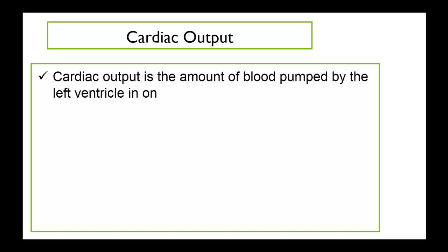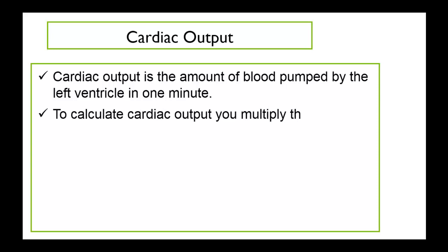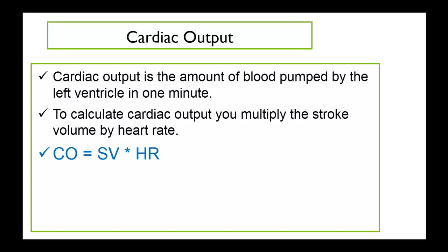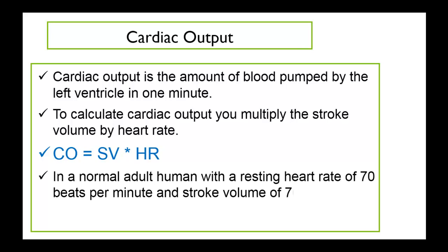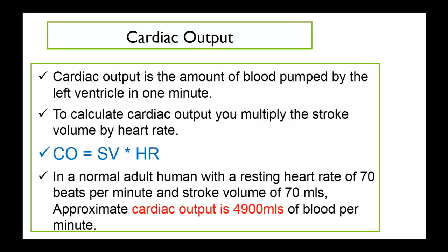Another measurement is cardiac output. Cardiac output is defined as the amount of blood pumped by the left ventricle in one minute. To calculate cardiac output, you multiply the stroke volume by heart rate. In a normal adult human with a resting heart rate of 70 beats per minute and a stroke volume of 70 milliliters, there is approximately a cardiac output of 4900 milliliters of blood per minute.